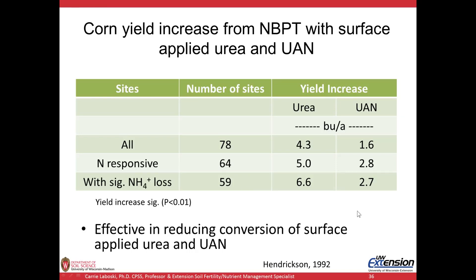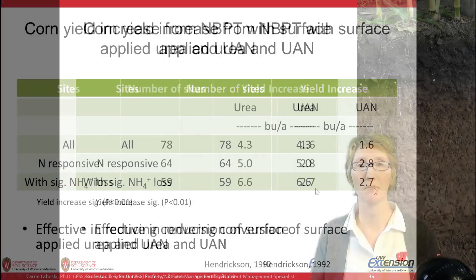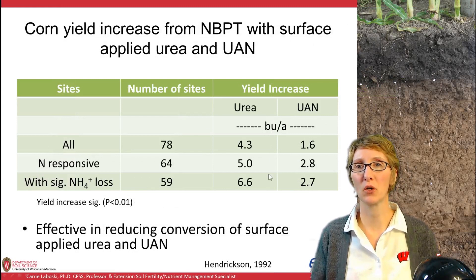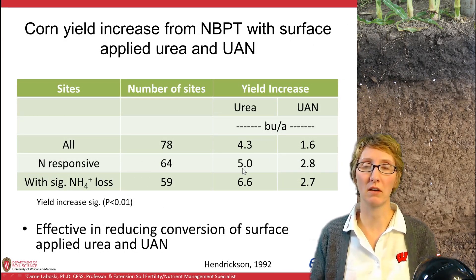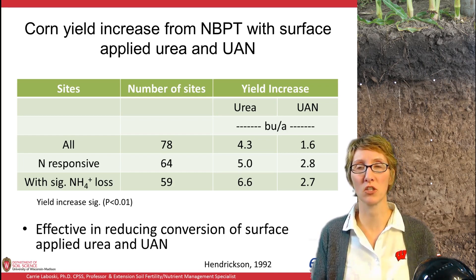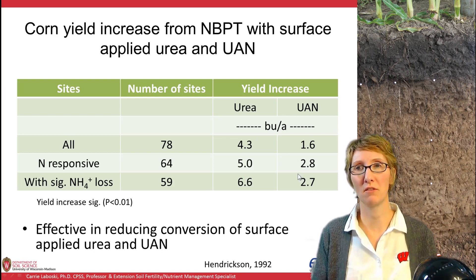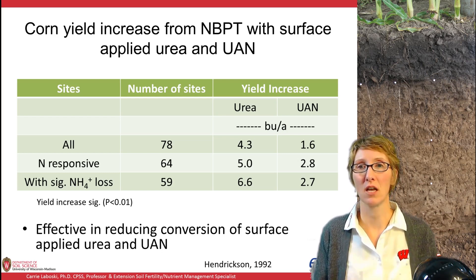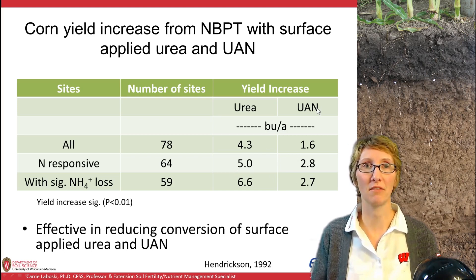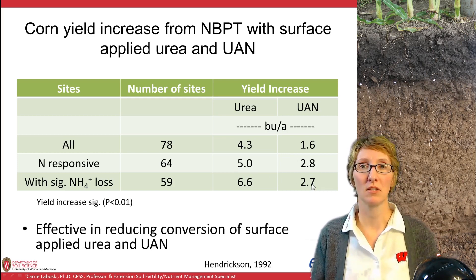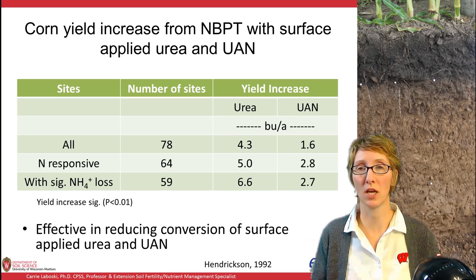At the 59 sites deemed as having significant ammonia losses, we see another increase in yield with urea. This makes sense: with urea, the urease inhibitor is protecting all of the nitrogen from potential volatilization losses. With UAN, only 50% of the nitrogen is urea, so the urease inhibitor is only protecting 50% — that's why you see reduced yield increases with UAN. This shows that when you have situations for ammonia volatilization with surface-applied urea, Agrotain is a useful tool to help control those N losses.